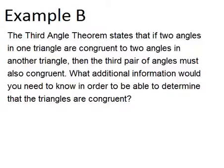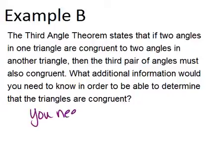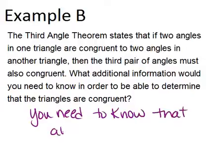Example B says: the third angle theorem states that if two angles in one triangle are congruent to two angles in another triangle, then the third pair of angles must also be congruent. What additional information would you need in order to determine that the triangles are congruent? To know that two triangles are congruent, we need information about their angles and about their sides. Knowing only that all three pairs of angles are congruent is not enough, so we would need to know that all pairs of sides are congruent as well.